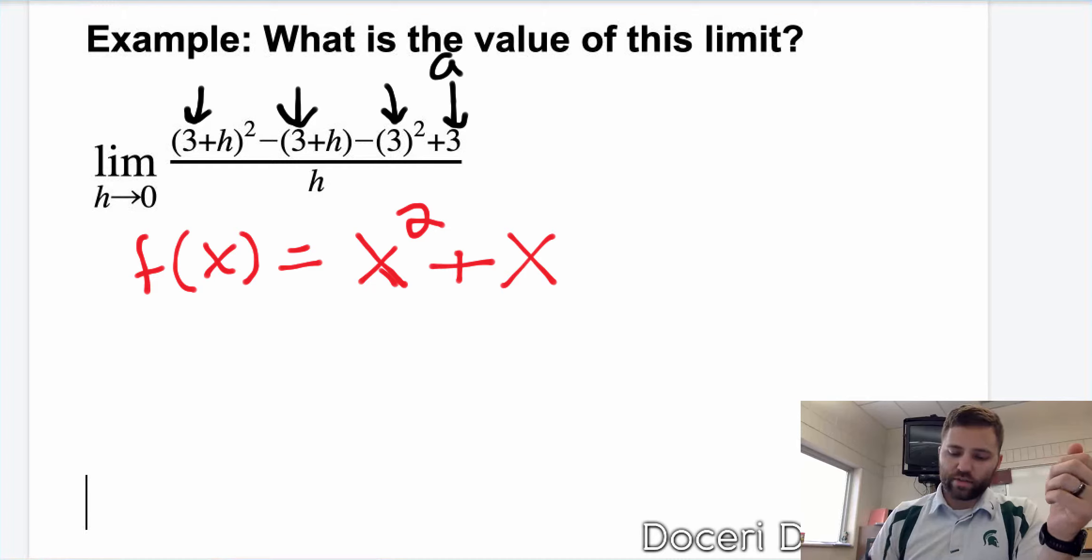Actually, this should be subtraction. I'm sorry. This should be subtraction, because I distributed the negative from the difference quotient there. So that should be subtraction. You can see that right here.